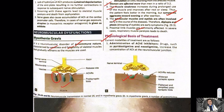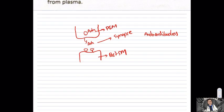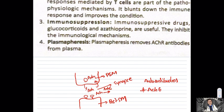Now for treatment. The first-line treatment is administration of acetylcholinesterase inhibitors. Acetylcholinesterase is an enzyme present in the synaptic space that normally breaks down acetylcholine into choline and acetate, after which choline is taken back up into the presynaptic membrane. By blocking this acetylcholinesterase enzyme with inhibitors, acetylcholine accumulates in the synapse and has more opportunity to bind to the remaining receptors.